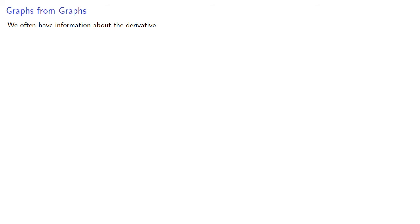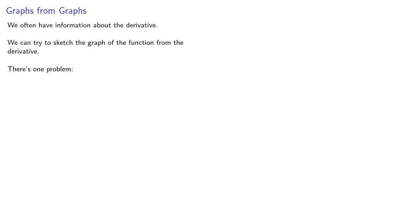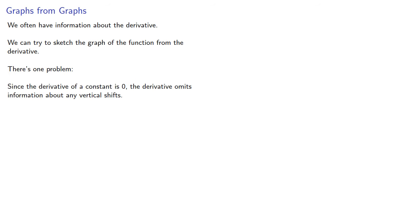We often have information about the derivative, and we can try to sketch the graph of the function from the derivative. There's just one problem: since the derivative of a constant is zero, the derivative omits any information about vertical shifts. So we can't place the x-axis.